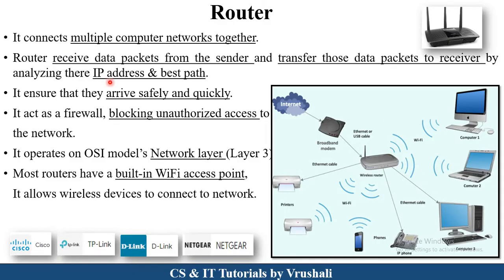The router analyzes the information according to the IP address, chooses the best path, and ensures the information arrives safely and quickly. Basically, the router also works as a firewall — it blocks unauthorized access to the network. For example, the Wi-Fi in your college has a particular password, and unauthorized users cannot access it. The router provides access only to authorized users. Router works on the third layer of the OSI model, that is the network layer. Different companies develop routers, such as Cisco, TP-Link, D-Link, and Netgear.